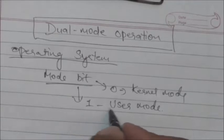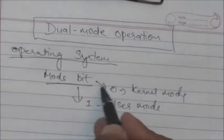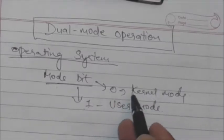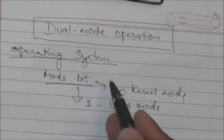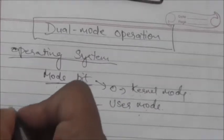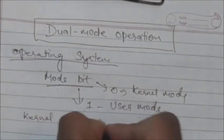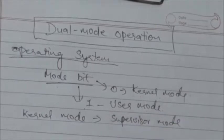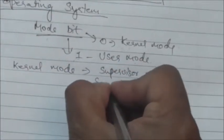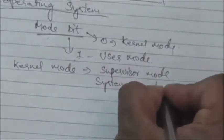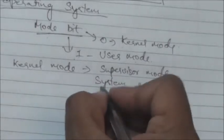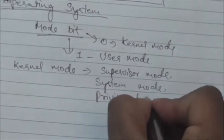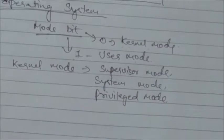Whenever the computer executes some code on behalf of a user application, it is said to be in user mode and at that time the mode bit will be 1. When the operating system gains control over the computer system, it is said to be in kernel mode and at that time the mode bit is 0. This kernel mode is also called supervisor mode, system mode, and privileged mode.